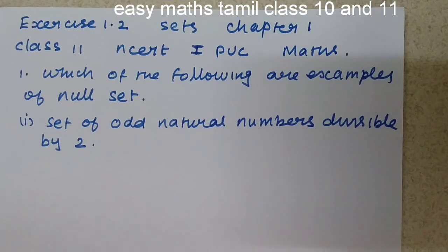Hello viewers, our topic today is Sets Class 11, Exercise 1.2 Question number 1: which of the following are examples of null set? Set of odd natural numbers divisible by 2.